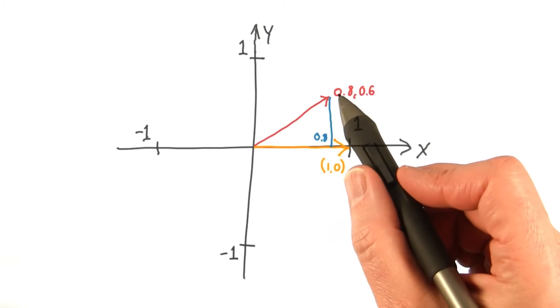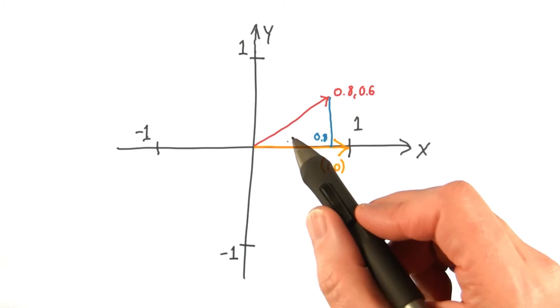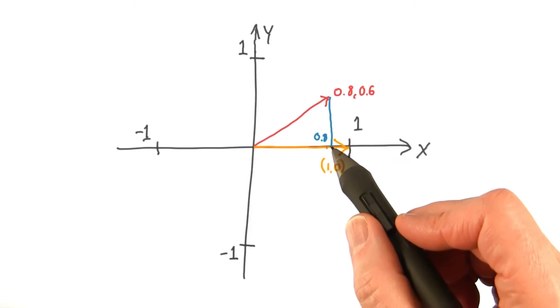If I draw a normalized vector here at 0.8, 0.6, the dot product between these two vectors is simply the x component, 0.8.